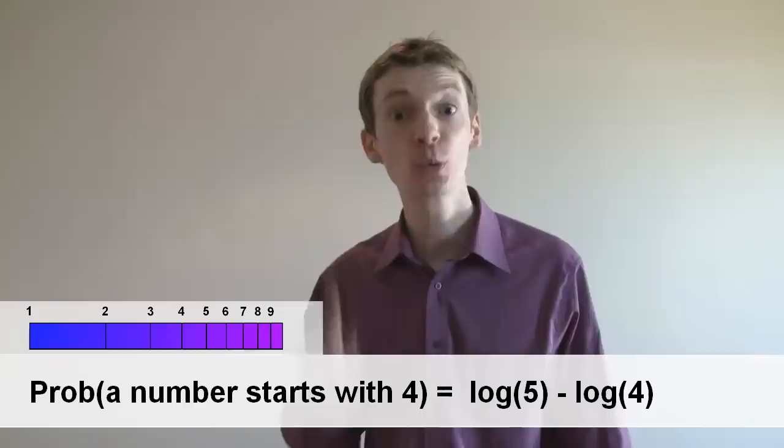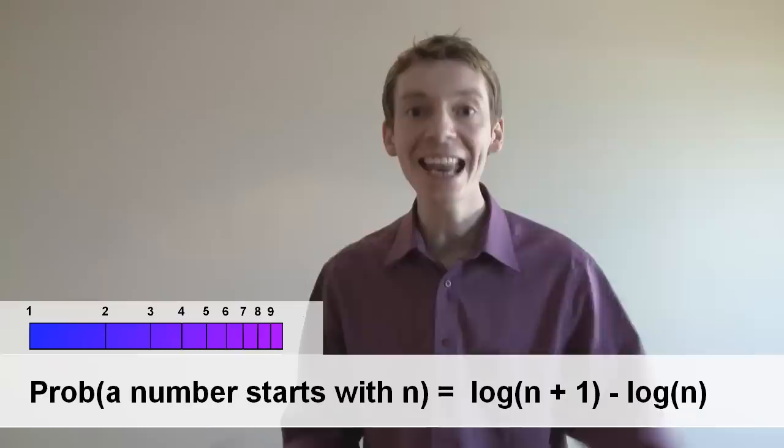In general, the probability that a number starts with the digit n is the log of n plus 1 minus the log of n. And in fact, this works for any string of digits.